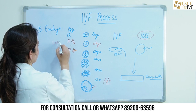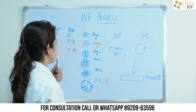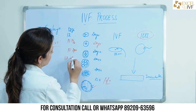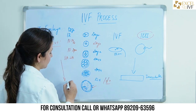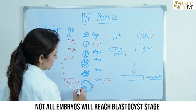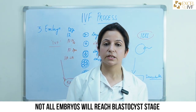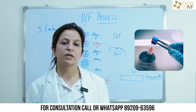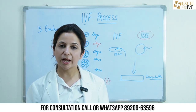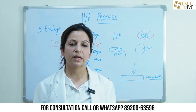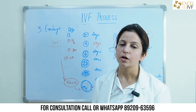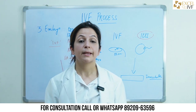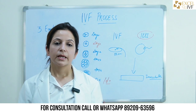Not every egg reaches the blastocyst stage — this is the IVF funnel. For example, of 10 fertilized eggs, we may have eight A-grade and two B-grade embryos on day two; advancing to blastocyst stage there is a decline, leaving perhaps five A-grade and two B-grade blastocysts. Pregnancy can happen with both A-grade and B-grade embryos. These embryos should either be transferred or frozen for subsequent cycles. In fresh transfers, we transfer two A-grade embryos in older women or a single embryo in younger women, freezing the remainder for future use.